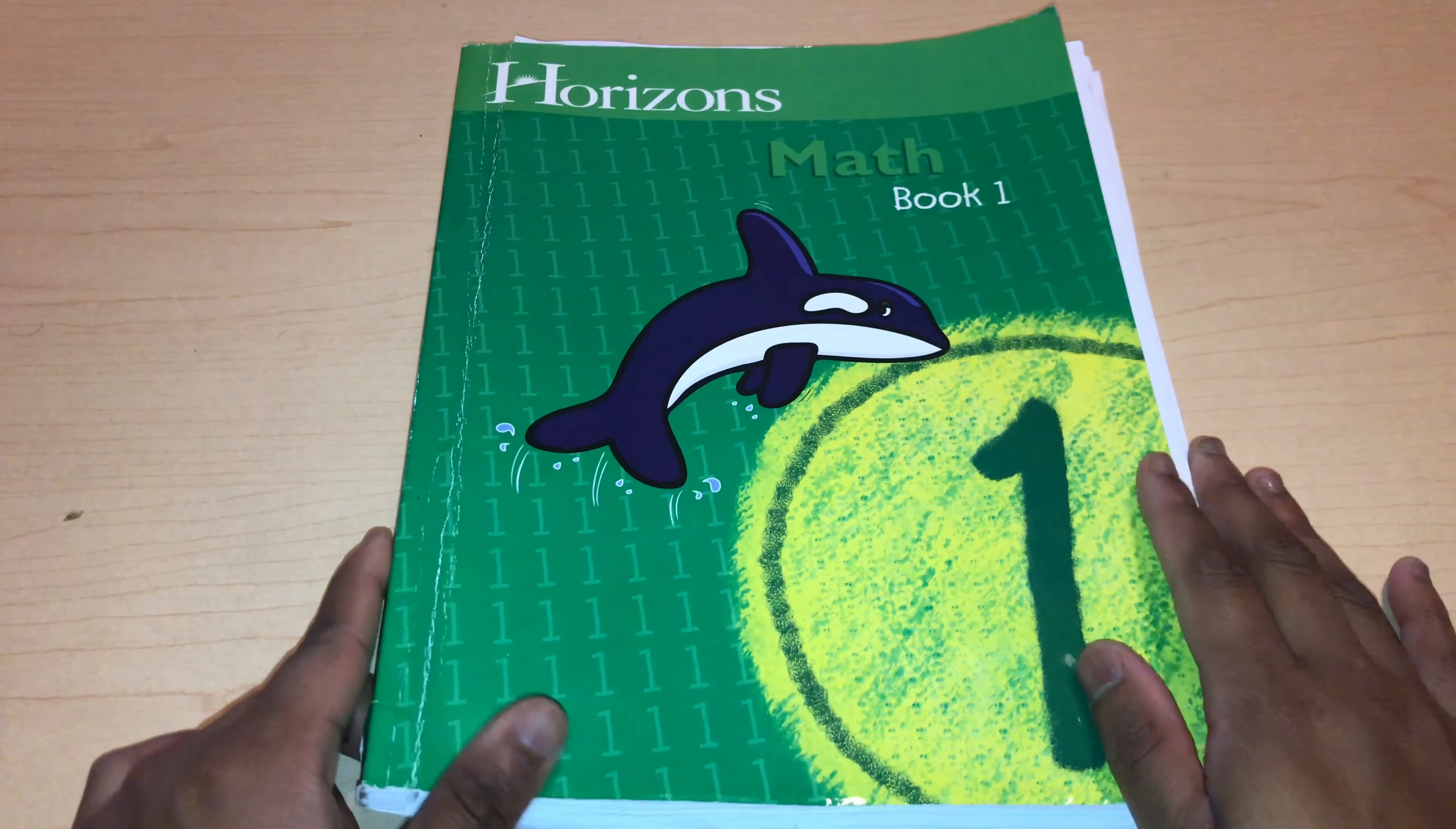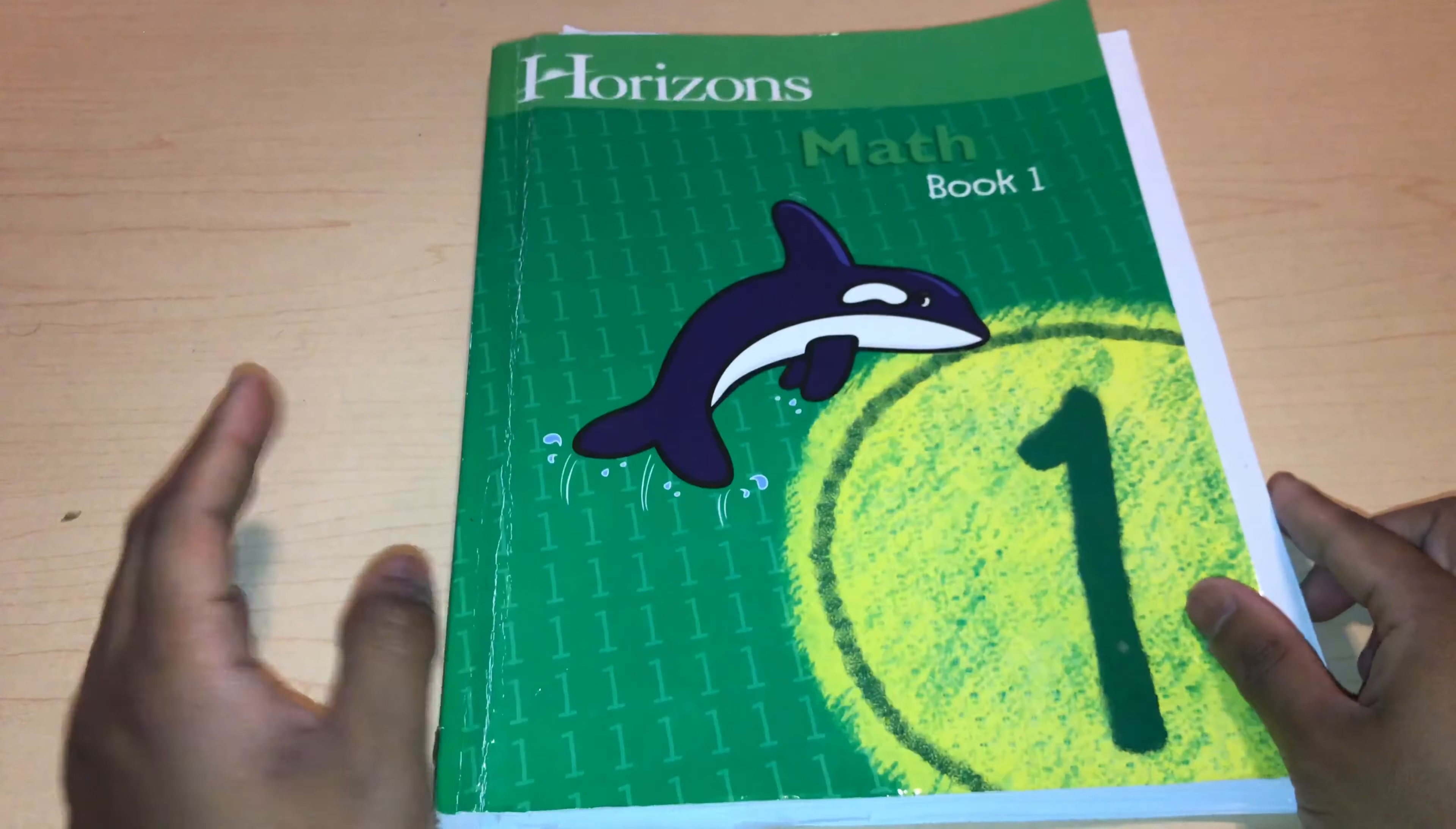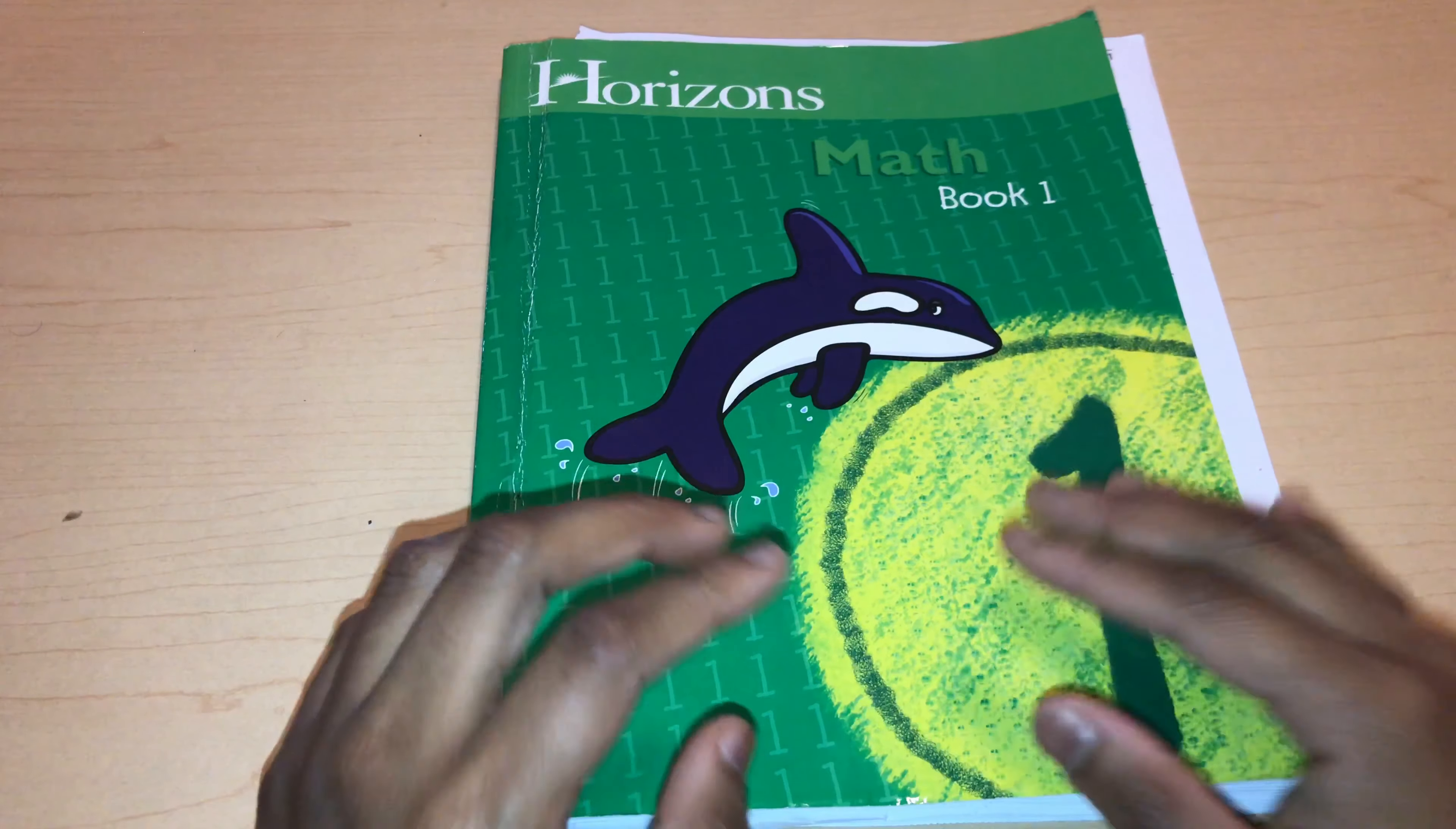This is for Monique. I'll be using it for her first grade math. I decided to go with Horizon for her because from flip-throughing online and asking other homeschool moms about it, I have noticed that this is definitely a more slower curriculum than Abeka, which I was going to be going for both kids. And Monique was struggling with math.